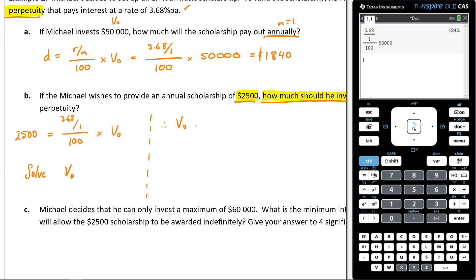So let's do that. Therefore, V₀ is going to be equal to... So what I'm going to do is I'm going to go menu 3, 1. I'm going to go $2,500. I'm going to set that equal to control divide. I'm going to go 3.68 divided by 1 over 100. Instead of saying V₀, I'm just going to say times X. And then I'm going to do that, hit enter.